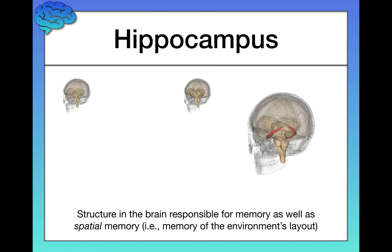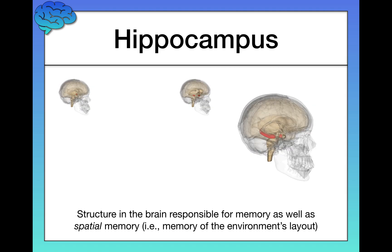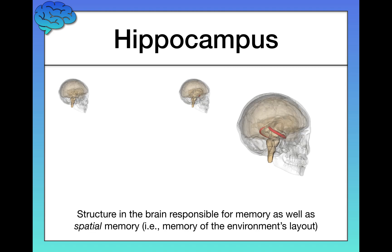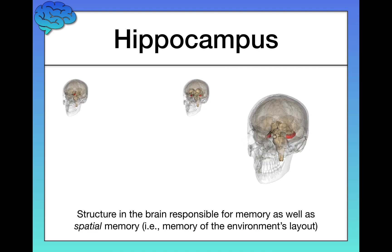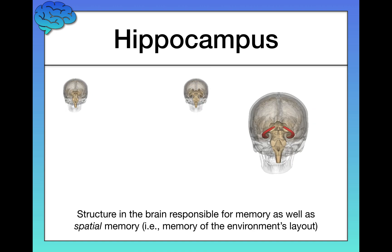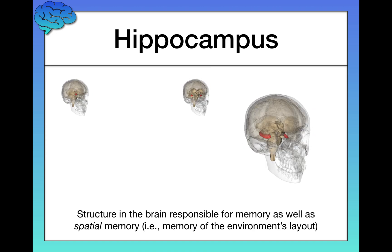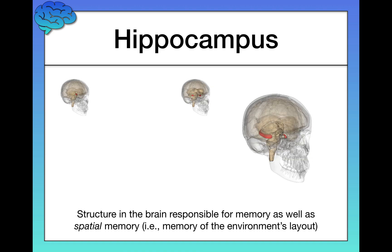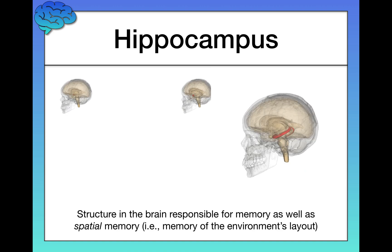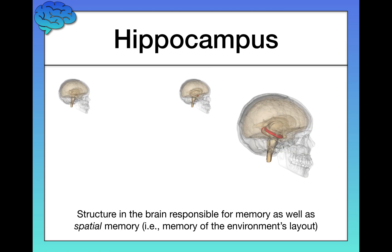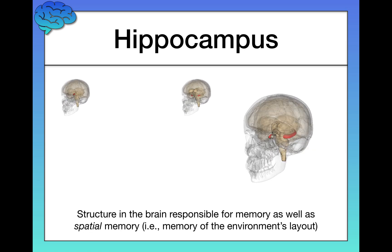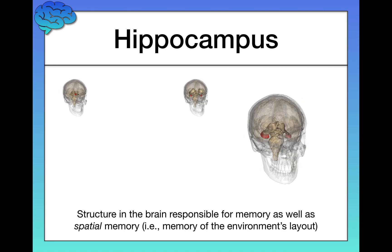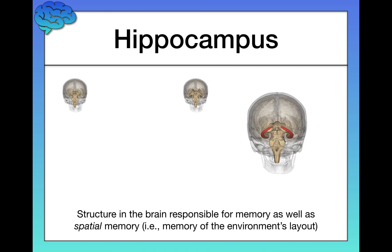Finally, we have the hippocampus, which is the key structure for memory. The hippocampus is important for storing memories of our past and forming new memories so they can be stored in other areas of the brain. It's also very important for spatial memory — understanding and mapping your environmental layout. If you know how to walk from your apartment to campus or to your favorite restaurant, you can thank your hippocampus. These brain structures will keep coming up in other specific content areas as we move forward.